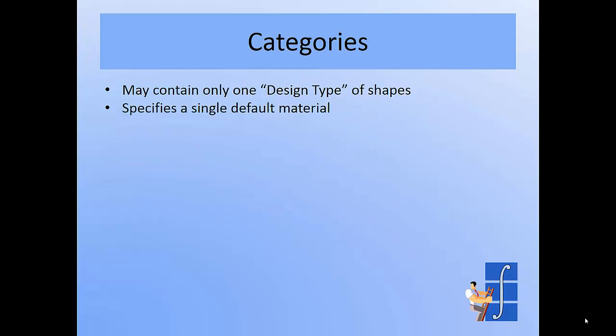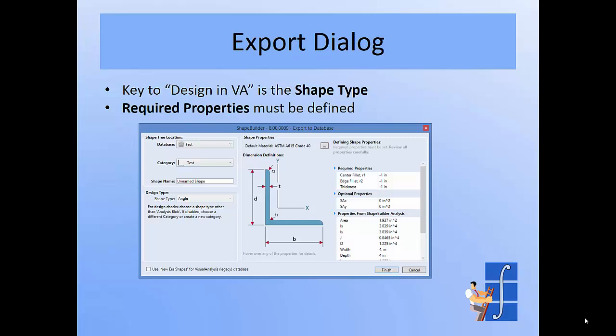The real key to getting design checks is categories. When you put your shapes in the database, they go into a file and then a subcategory, and that subcategory defines the design type. It also defines a single default material used in Visual Analysis when you drop that shape in. You can't mix shapes of different types in one category, so if the export dialog isn't allowing you to change the design type, it's because you've selected a category that already has shapes in it.